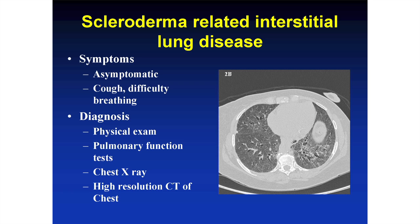The gold standard for diagnosing interstitial lung disease, including in scleroderma, is the high-resolution CT of the chest, which shows that lung tissue is replaced by abnormal tissue that is denser than normal lung tissue — it looks more white than it should. This is a CT scan of a patient with scleroderma-associated pulmonary fibrosis where the lung, which should be nice and black, is replaced by white fibrotic scar tissue.